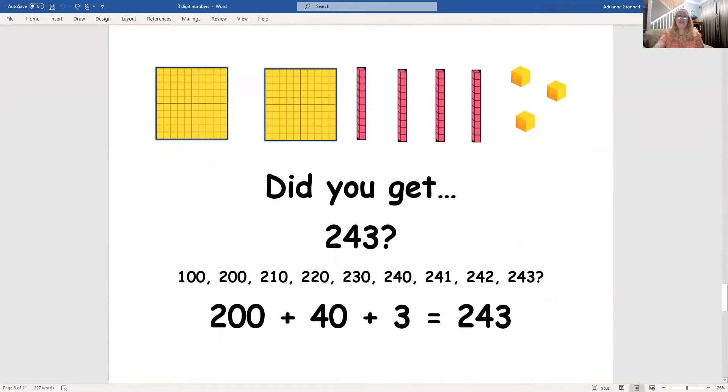Okay. Did you get 243? We count that number like this. 100, 200, 210, 220, 230, 240, 241, 242, 243. The expanded notation for the number is 200 plus 40 plus 3 equals 243. Did you get all of that? Awesome.